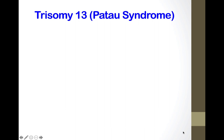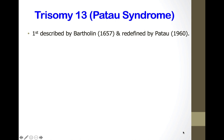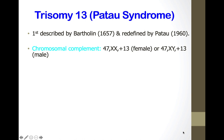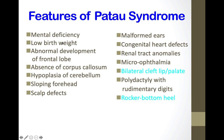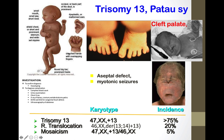Trisomy 13 is Patau syndrome. Chromosome complement is 47,XX+13 or 47,XY+13. Incidence is about 1 in 12,000, increasing with maternal age. Features include mental deficiency, low birth weight, absence of the corpus callosum, hypoplasia of the cerebellum, sloping forehead, scalp defects, polydactyly, malformed ears, congenital heart defects, renal tract anomalies, microphthalmia, and clenched hands with overlapping fingers at birth.